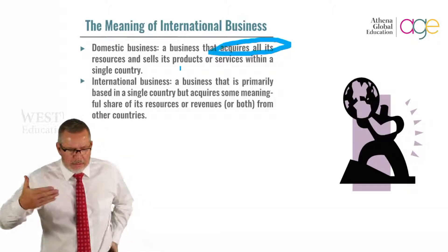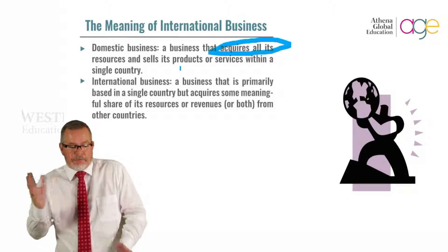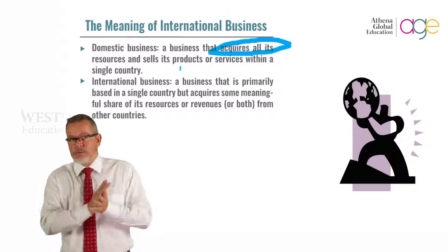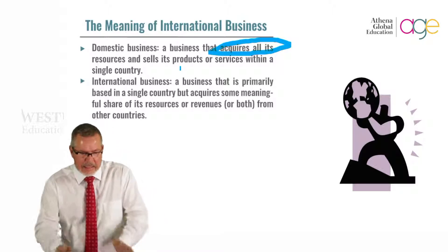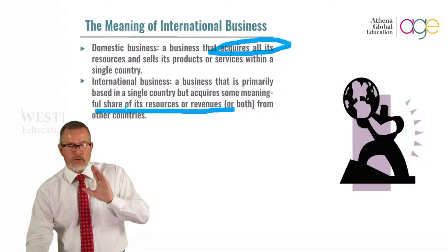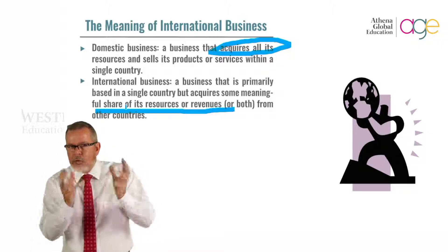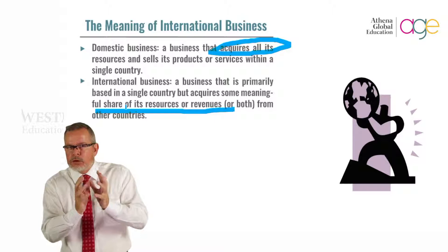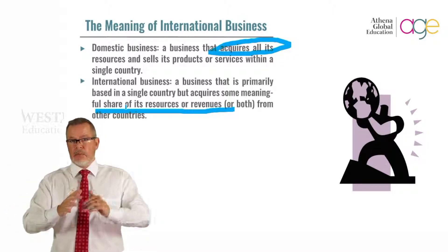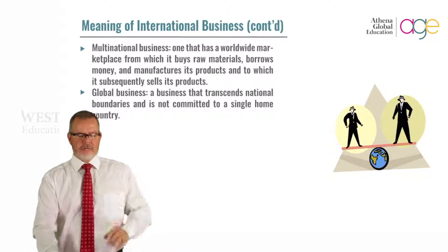International normally means that it's based in a single country, but it acquires from somewhere else and it might also sell to somewhere else. It draws a full share of its resources or revenue, or both, from other countries. So it's still somewhat country-bound in terms of where it's situated, but there's drawing of resources from other areas and also selling into other areas.